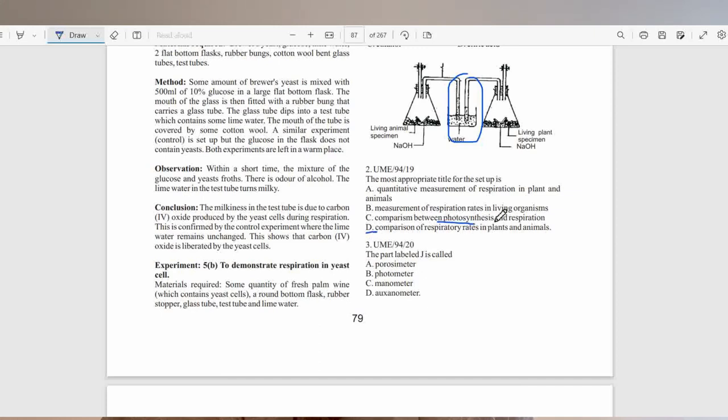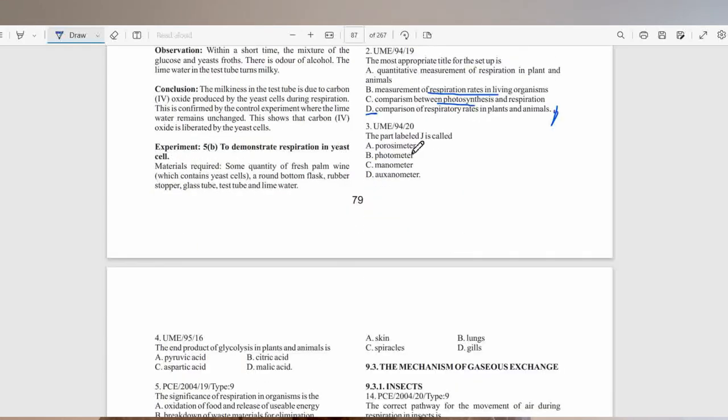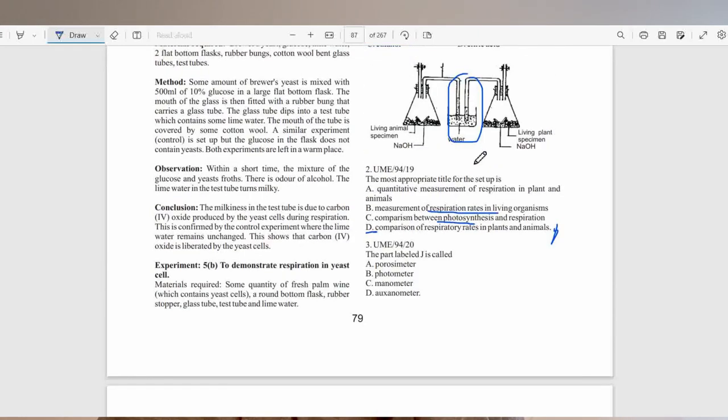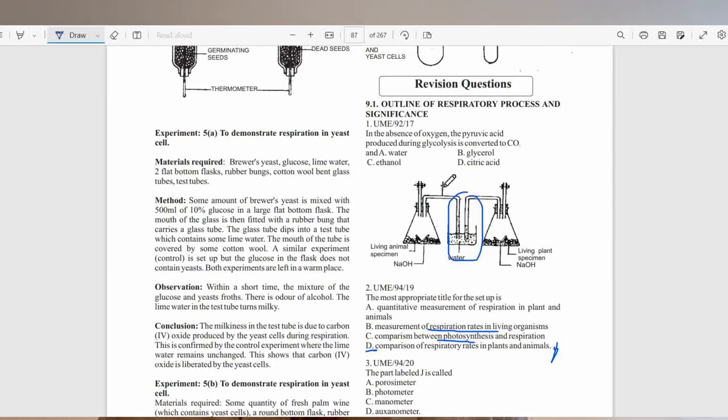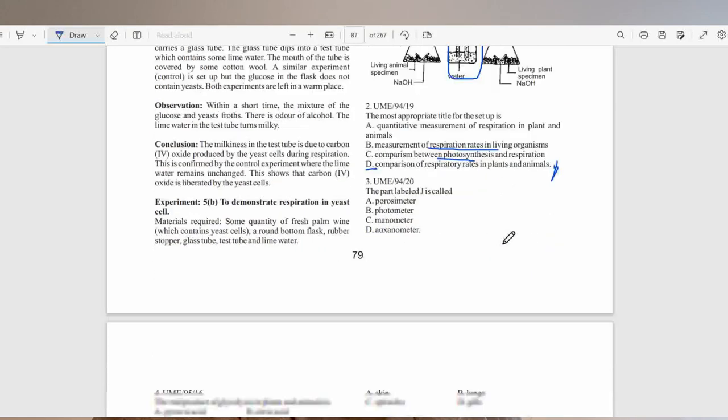This is not photosynthesis, and this is not just respiration rate in living organisms. It's specifically plant and animal. The path labeled J is called the manometer. It's on both sides. The manometer is used to measure the pressure of liquids and gases.